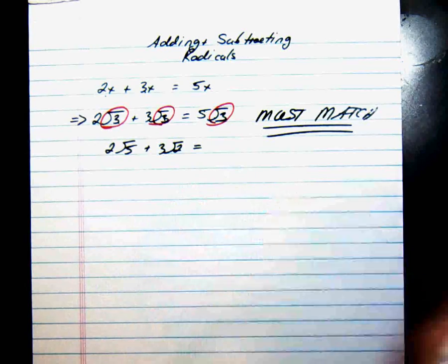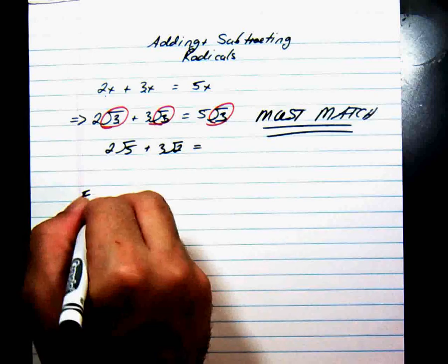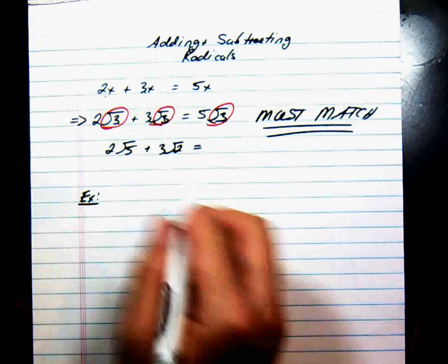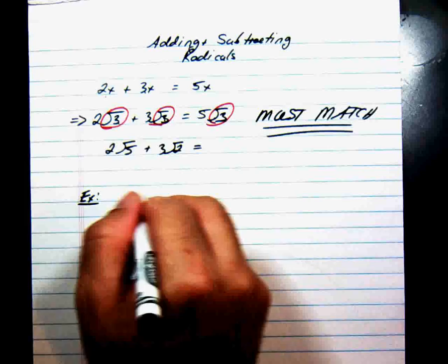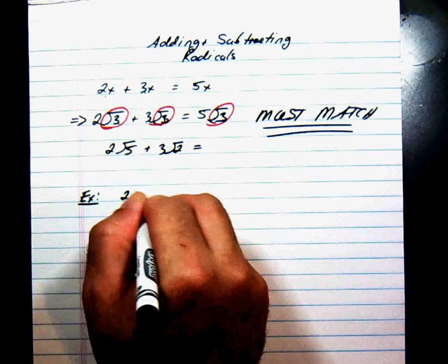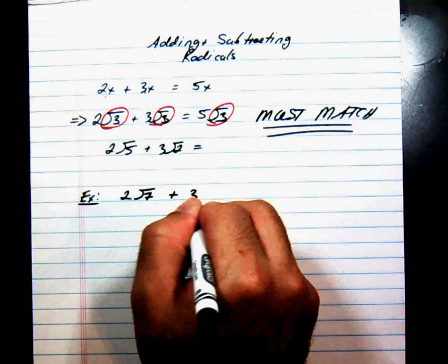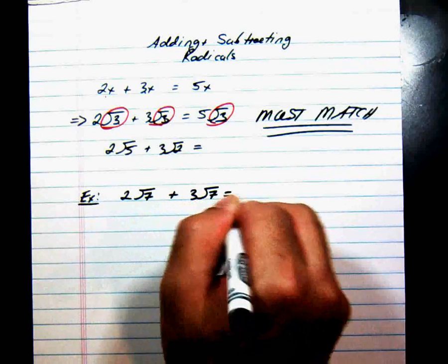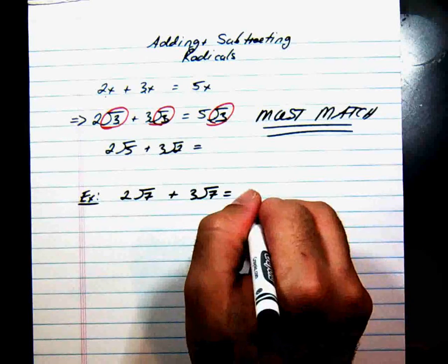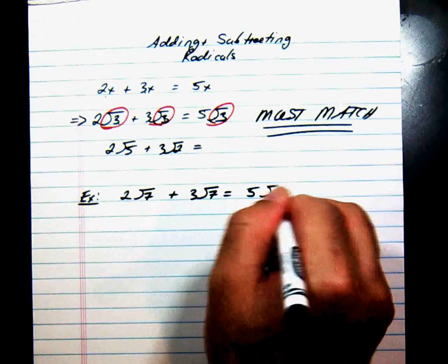So let's go ahead and do a couple. Let's try this one. Let's say that we have 2 square roots of 7 plus 3 square roots of 7. That's going to be equal to, just like above, 5 square roots of 7.